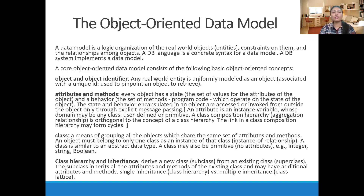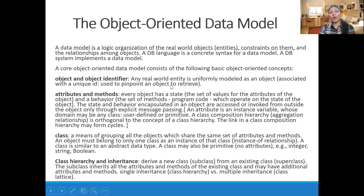The first concept is object and object identifier. Any real-world entity is uniformly modeled as an object, as we have studied in object-oriented programming. Each object is associated with a unique ID used to pinpoint and retrieve it. The system automatically provides an object ID to every object created in the object-oriented DBMS.